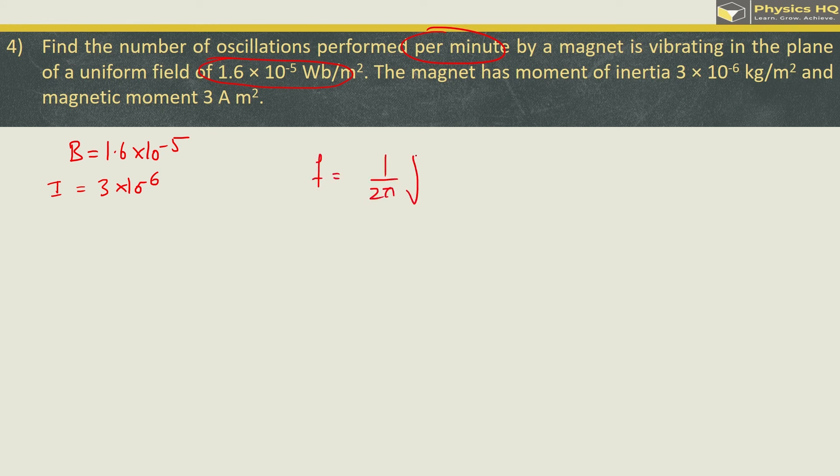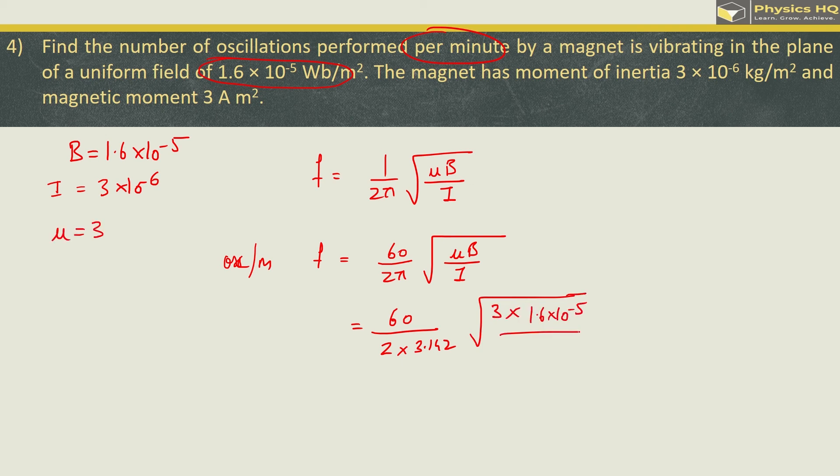First of all they are asking frequency of oscillation per minute so this will be 60 upon 2 pi under root mu B by i. So this is equal to 60 upon 2 into 3.142 under root mu value is 3, B is 1.6 into 10 raise to minus 5, i is given as 3 into 10 raise to minus 6.